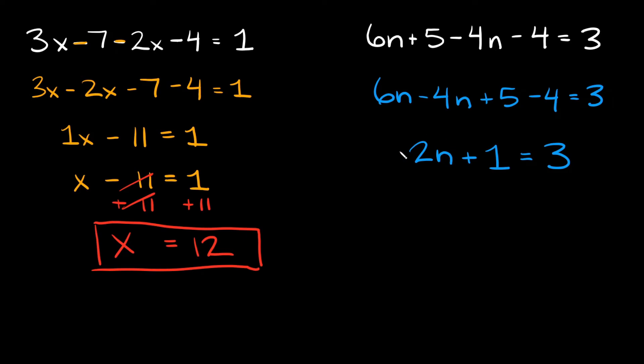We're almost there we're still trying to isolate n by itself so the next thing we're going to do is get rid of this plus 1. In order to do that we're going to subtract 1 from both sides. These ones cancel out they just go to 0 so we're just going to be left with 2n on this side and then that's equal to 3 minus 1 which is equal to 2.